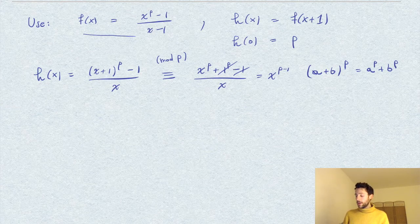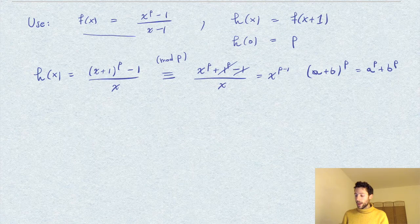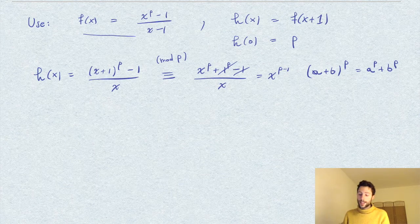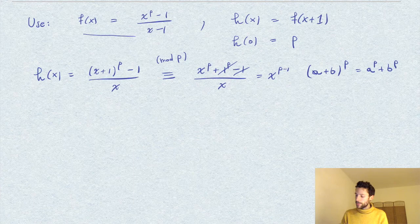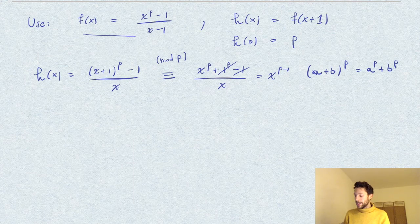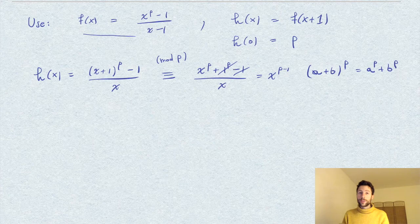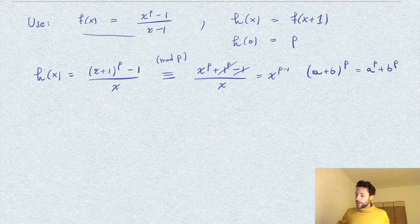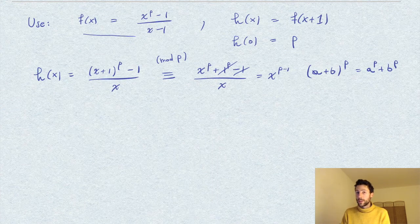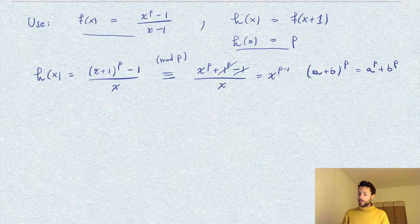So modulo p, our polynomial h is equal to x to the p minus 1. And since h has degree p minus 1, of course it means that it satisfies Eisenstein criterion, because by reduction modulo p, all the coefficients of lower degree than h have been killed by this reduction, and that means that they are divisible by p.